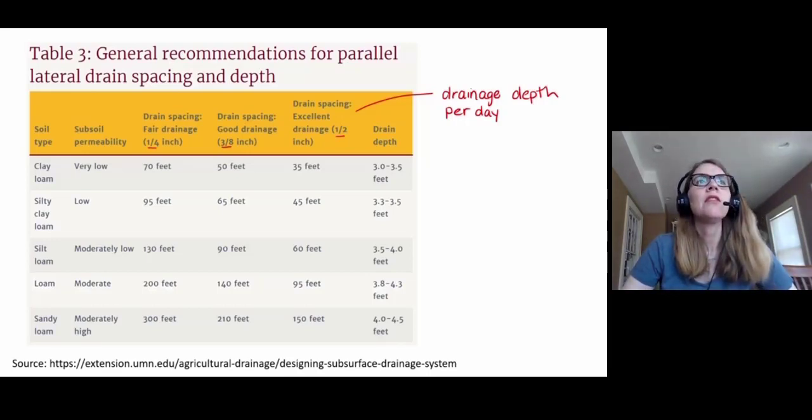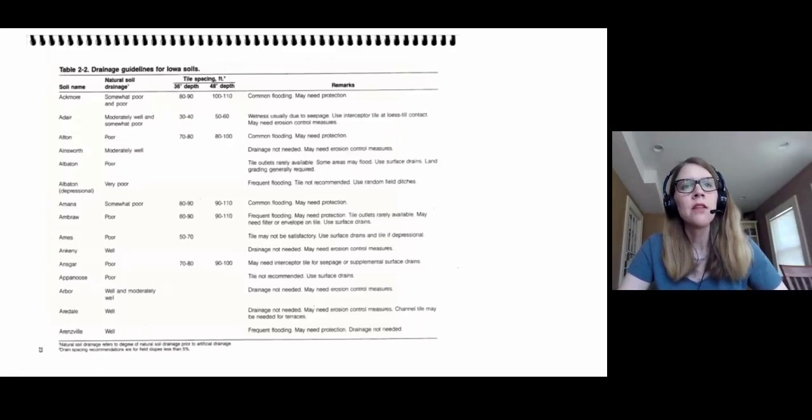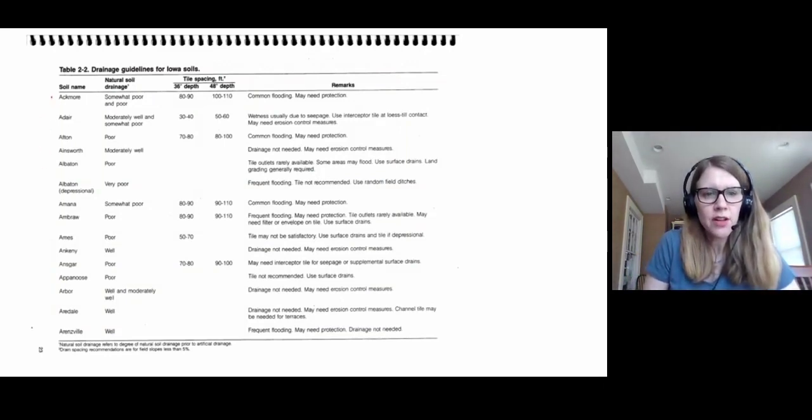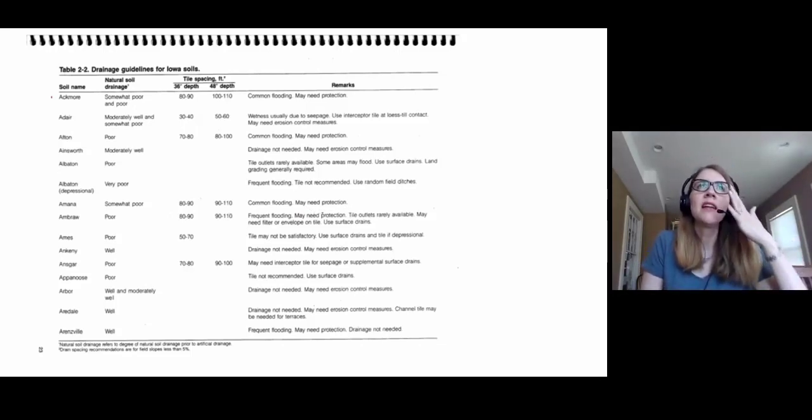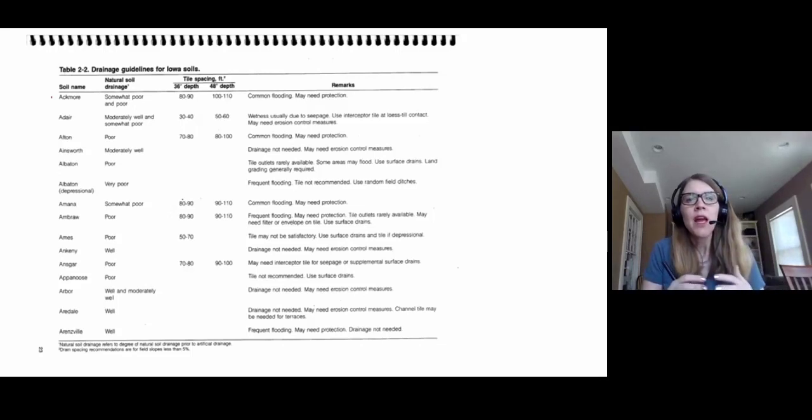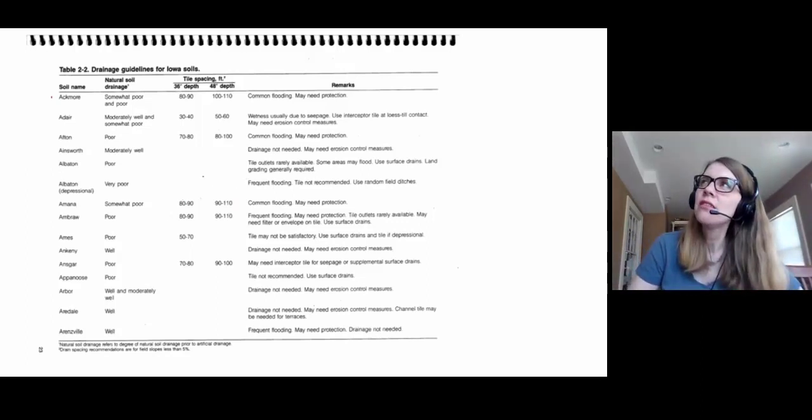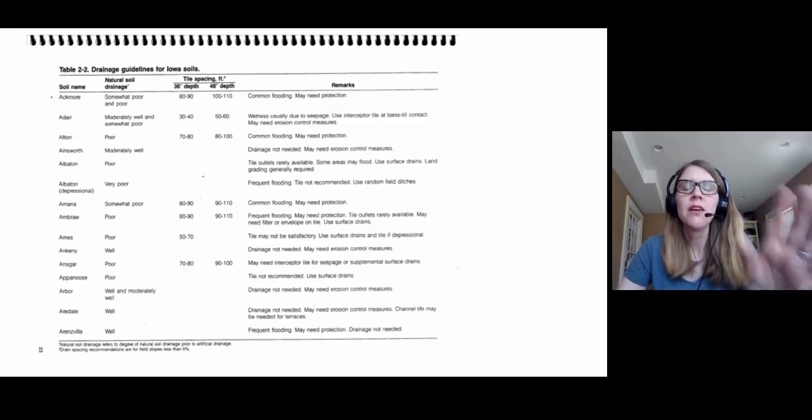You can also, most states, in most states, you can also find more specific recommendations that don't just go by general soil type but in fact go by soil series. So here's an excerpt from the Iowa Drainage Guide that gives drainage recommendations by soil series. Here they're all in alphabetical order. So for instance, this Amana soils, the natural soil drainage is somewhat poor. It also commonly experiences flooding. So the drainage guide will tell you you might need to think about protecting that soil from flooding. And that at 36-inch depth we're going to place them a little bit closer together. At 48-inch depth we're going to place them maybe a little bit farther apart.